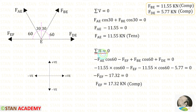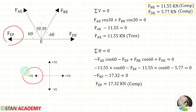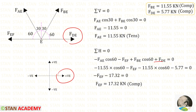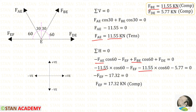Now let us apply the rule Sigma H = 0. To make FAE horizontal we need 60 degrees, so we multiply FAE with cos 60. When we make it horizontal it will be acting towards the left side, so it is negative. FEF is also acting towards the left side, so it is negative. To make FBE horizontal we need 60 degrees, so we multiply FBE with cos 60. When we make it horizontal it will be acting towards the right side, so it is positive. FDE is also acting towards the right side, so it is positive. Applying the known values: FAE (tensile), FBE (compressive, applied as negative), and FDE (compressive, applied as negative). Finally for FEF we will get a negative value, meaning it is compressive.